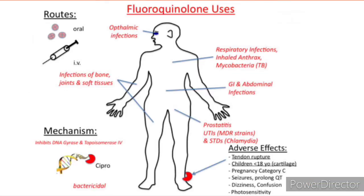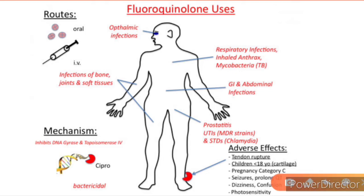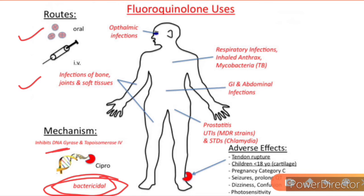This is just an overview of fluoroquinolones. They can be given orally as well as IV. The mechanism, as we studied, is via DNA gyrase, and they are bactericidal — they kill bacteria. Uses include ophthalmic infections, infections of bone, joints, and soft tissues, respiratory infections, inhaled anthrax, mycobacteria, GI and abdominal infections, prostatitis, UTIs, and STDs like chlamydia.